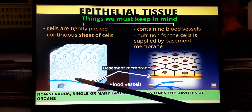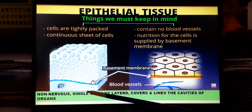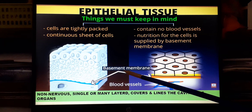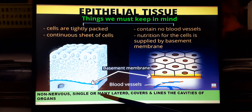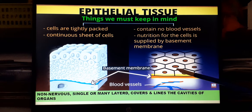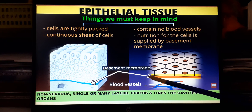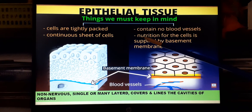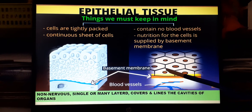If arranged in a single layer, that single layer of cells rests on the basement membrane. If there are many layers, the lowermost layer rests on the basement membrane. The basement membrane provides nutrition to the cells of the epithelial tissue.